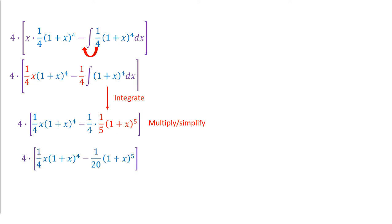Now we're going to simplify again. We are going to multiply that 4 throughout. So 4 times 1/4 is 1. So we are going to cancel my fours. 4 times 1/20, well, 4 goes into 20 five times. So we're going to have a 5 in our denominator. Now let's see what we've got because it's a little ugly. Let's just clean it up over here. We have x times 1 plus x to the fourth minus 1/5 times 1 plus x to the fifth.